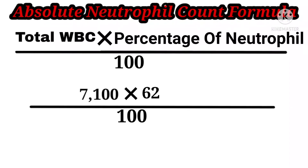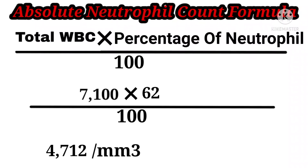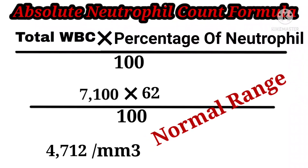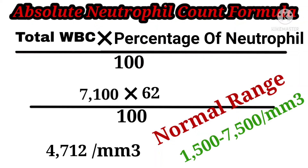The calculation gives 4712, expressed in per millimeter cube. The normal range of absolute neutrophil count is 1500 to 7500 per millimeter cube.